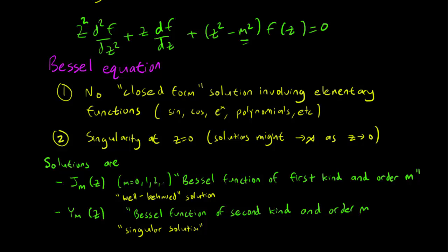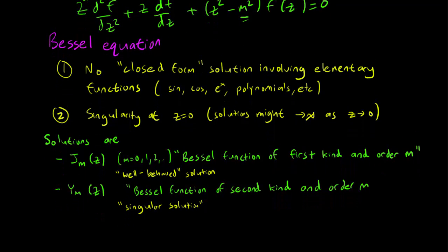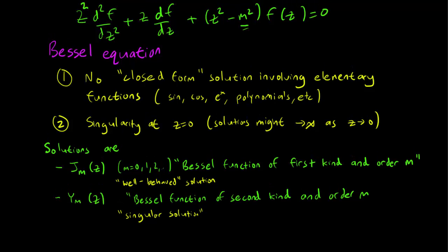And of course, since the Bessel equation is a second order equation, we know that the general solution of the Bessel equation is going to be of the form f equals c1 times J_m(z) plus c2 times Y_m(z), where J_m is the first kind and Y_m is the second kind. So this is the general solution of the Bessel equation.